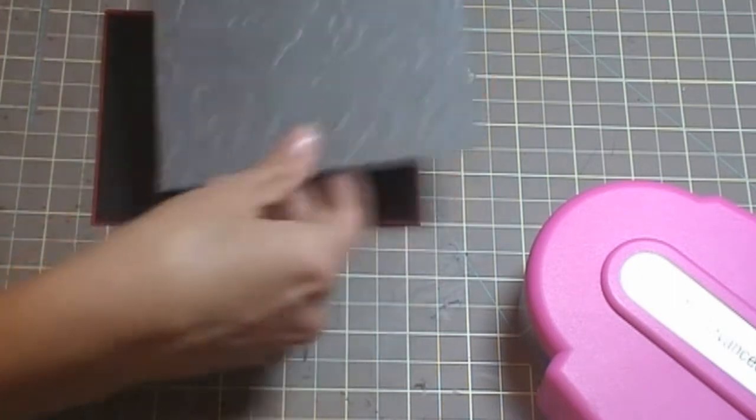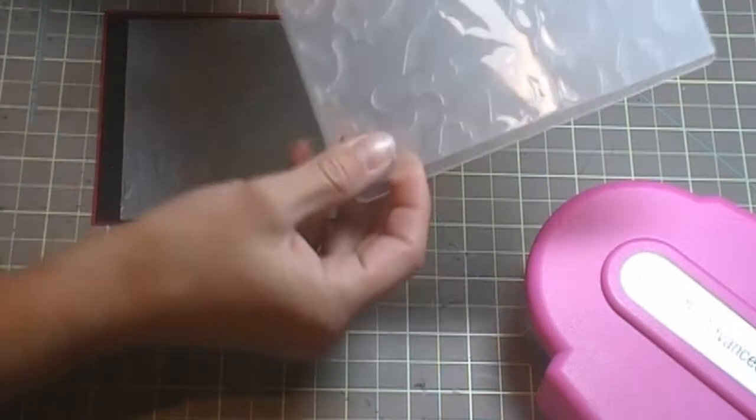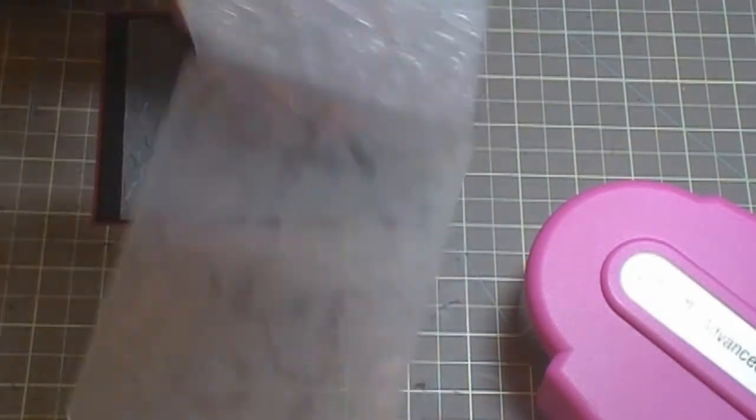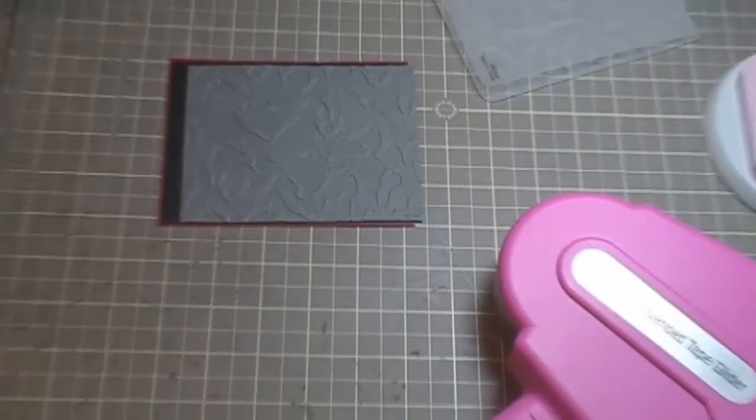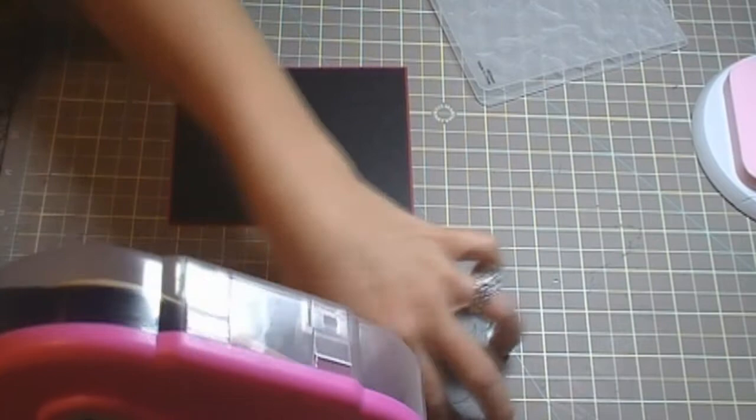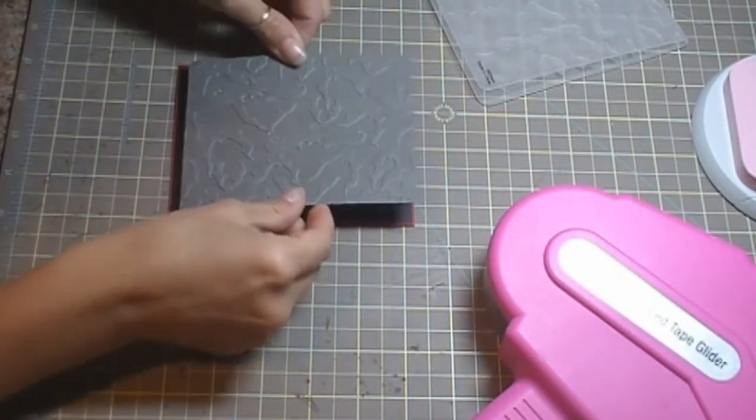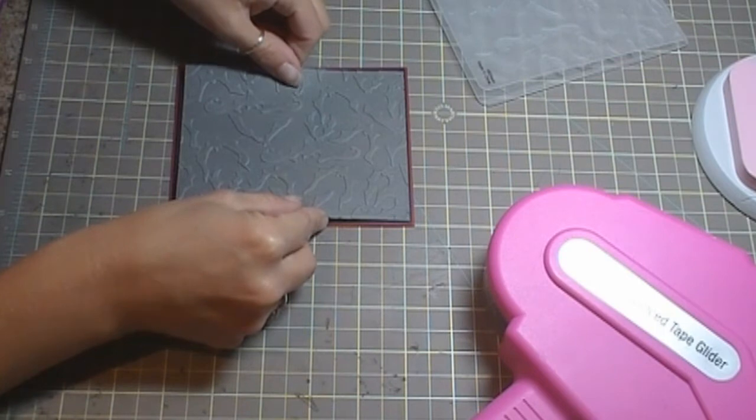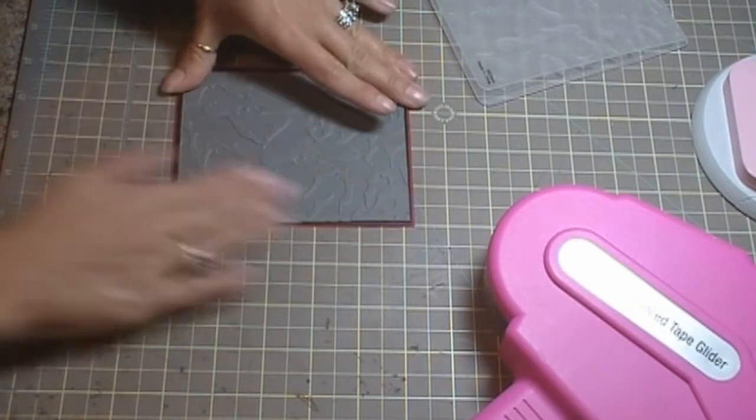Okay, and then I have a piece of gray cardstock which I ran through this Sizzix folder. And that is, let me go out a little bit here so you can see better, a Sizzix, or I have basil cardstock, sorry. So I ran it through that bat embossing folder, and this is also 1⁄8 inch shorter than the other piece.